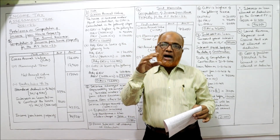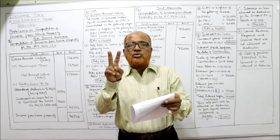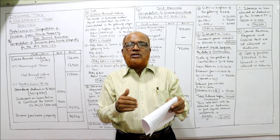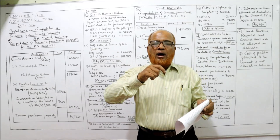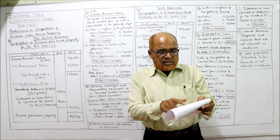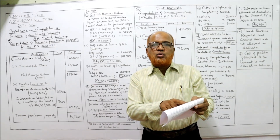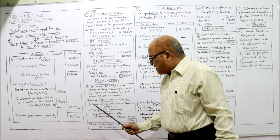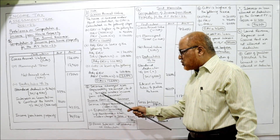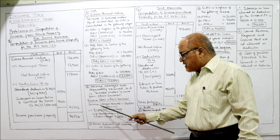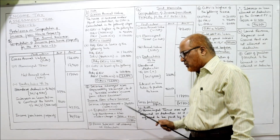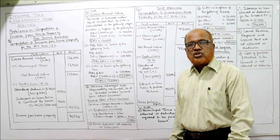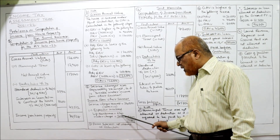While computing income from other sources, we take the amount charged from the tenant: ₹2,000 per month × 12 = ₹24,000. From that ₹24,000, we deduct the expenditure incurred by the landlord: lift maintenance ₹6,200 and water charges ₹2,000, totaling ₹8,200. So income from other sources: service charges received = ₹24,000 minus expenditure on services (lift maintenance ₹6,200 + water charges ₹2,000 = ₹8,200) deducted.